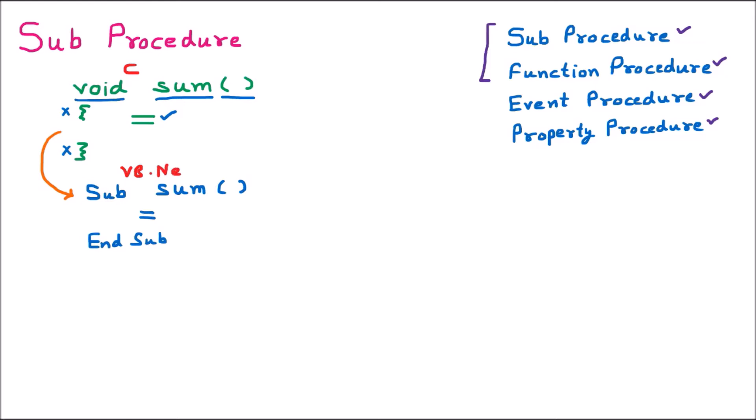The calling of a procedure is totally the same in both C and .NET. To call the procedure, we take the name of the procedure, which is sum. We write sum followed by empty brackets, since there is no argument. So this is how we call the procedure — this is procedure calling with no argument.